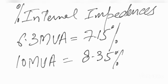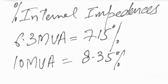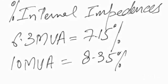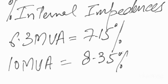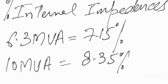Let us assume we have two transformers of different impedance: 6.3 MVA of 7.15% and 10 MVA of 8.35% impedance.